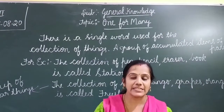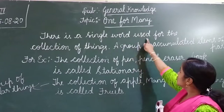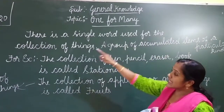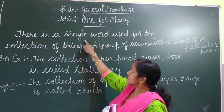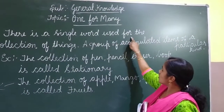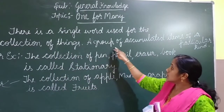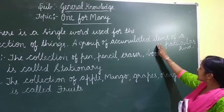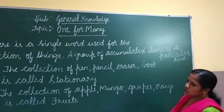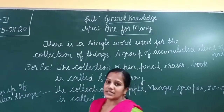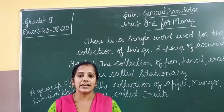So what is this 'one for many'? There is a single word used for the collection of things — a group of accumulated items of a particular kind. There is a single word which we have given for a group of things of a particular kind.